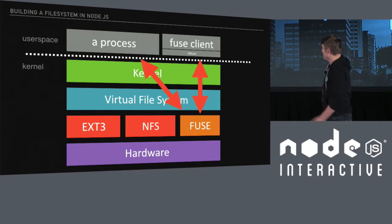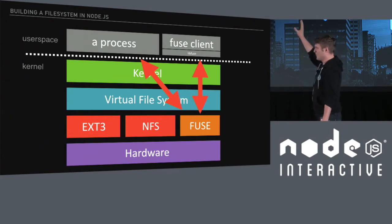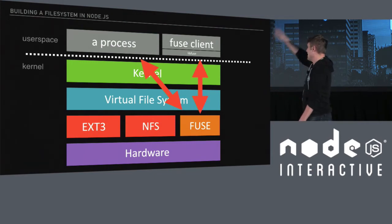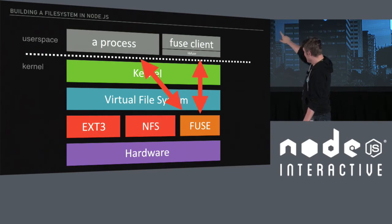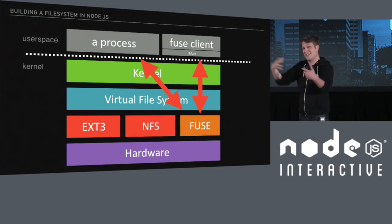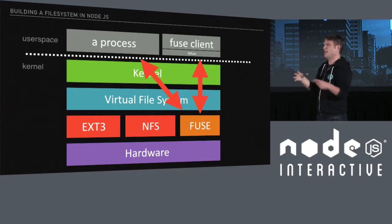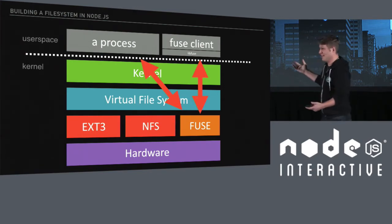Fuse operates through a clever request and response model. Let's say you have another process — it could be a cp or ls, you're looking at the contents of a directory. It goes down to the kernel, it hits the Fuse kernel module, it requests all of the directory contents. That then gets back up to the Fuse client. The Fuse client gets that command and says: okay, we're requesting the contents of this directory, and I'm going to provide you the contents and the metadata associated with that directory in application code running in user space.